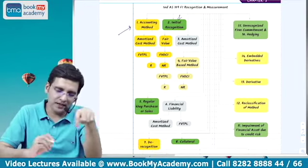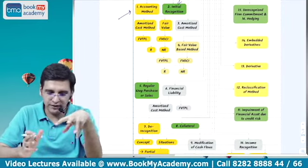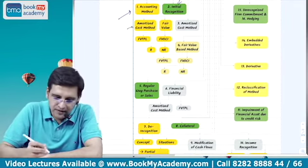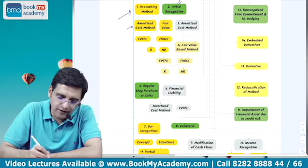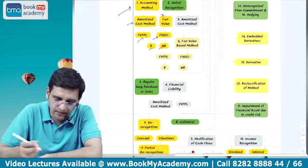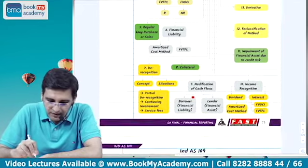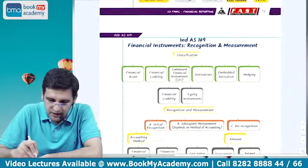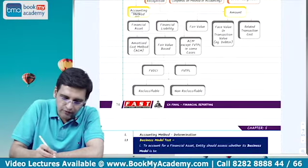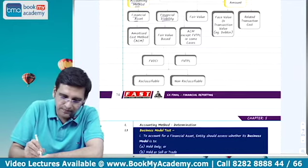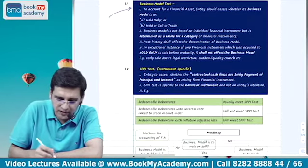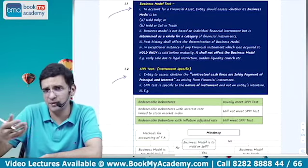First you need to understand what the accounting method should be — not for initial recognition but for subsequent measurement. There are primarily two methods: one is the cost-based approach known as the Amortized Cost Method, and the fair value approach with two methods — FVTPL and FVTOCI which is reclassifiable or non-reclassifiable. When we talk about which method to use, Ind AS 109 says this depends on the Business Model Test and the SPPI test.